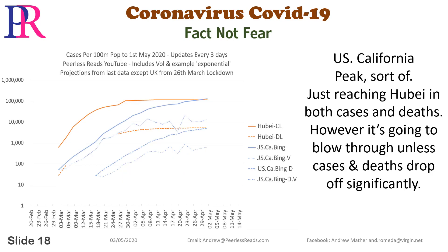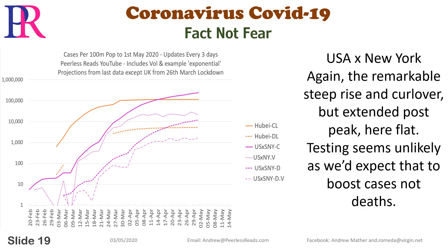US California: peak — sort of — just reaching Hubei in both cases and deaths. However, it's going to blow through unless cases and deaths drop off significantly. USA New York: again the remarkable steep rise and curl over, but extended post-peak here flat. Testing seems unlikely as we'd expect that to boost cases but not deaths.